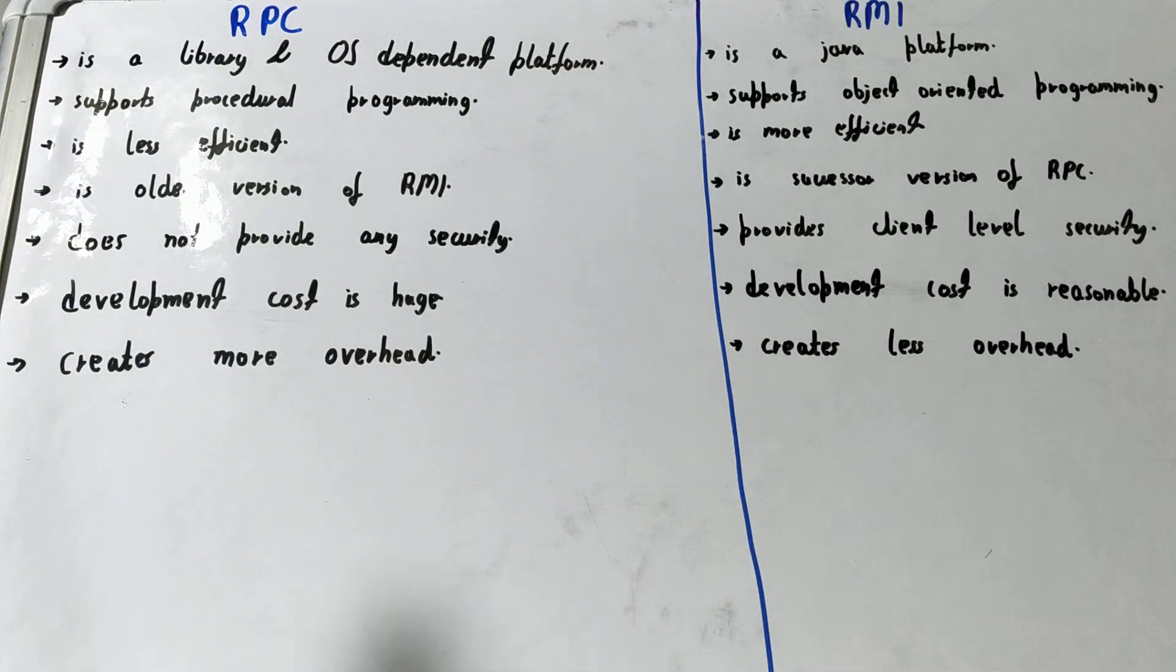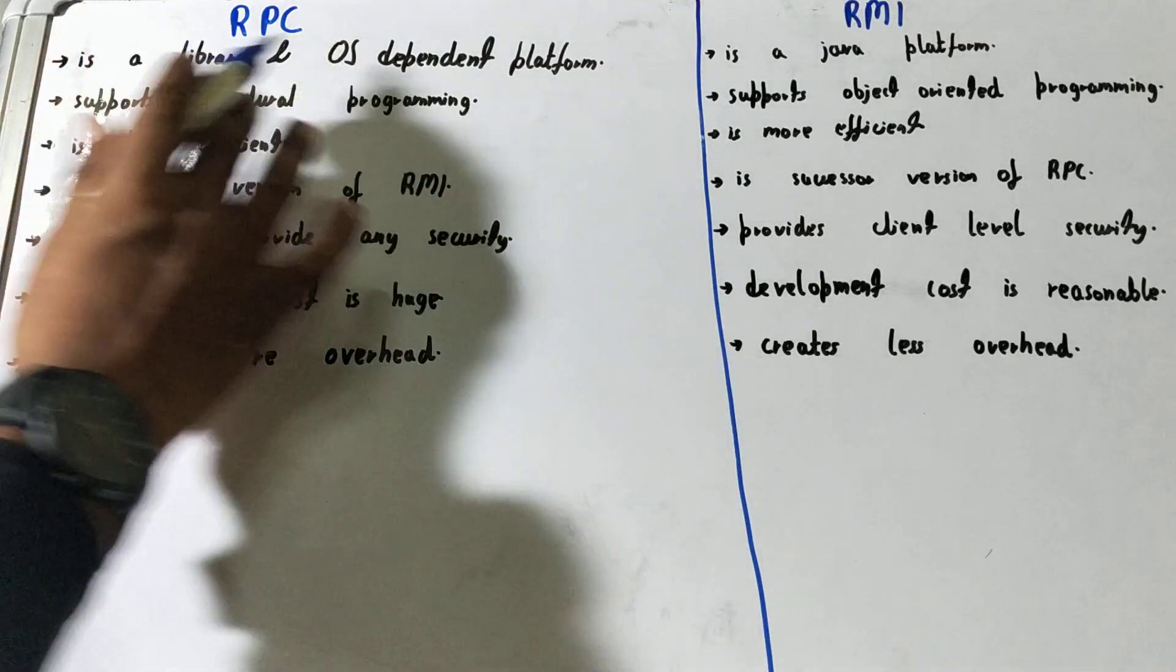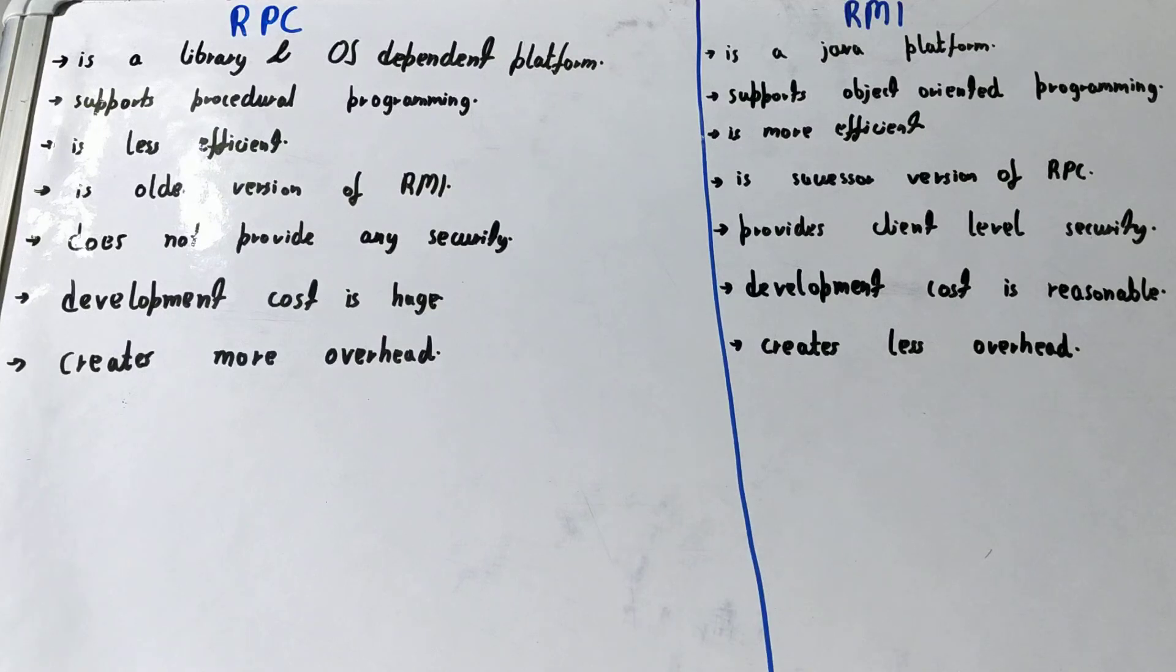Hello friends, in this video I'll be explaining the difference between RPC and RMI. RPC, also called Remote Procedure Call, is a design platform for procedural languages. RMI, or Remote Method Invocation, is a design platform for object-oriented programming languages.